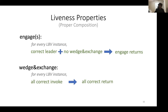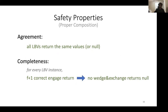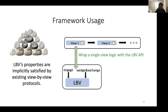For safety, we require agreement: all LBVs return the same values in a properly composed execution — they might return bottom, but if they return a value other than bottom, it has to be the same. Another property we require is completeness: for every LBV instance, if F+1 correct engage invocations return, then no wedge-and-exchange returns null. These properties are already implicitly satisfied by existing view-by-view protocols, so to use our framework, all we need to do is take a single view of the view-by-view protocol and wrap it with the LBV API.